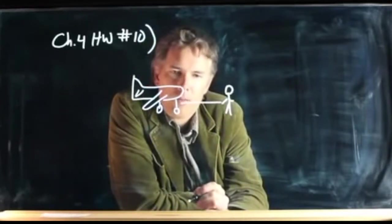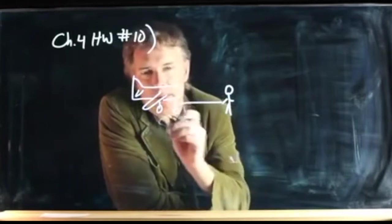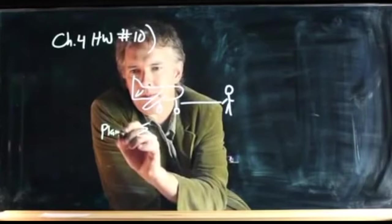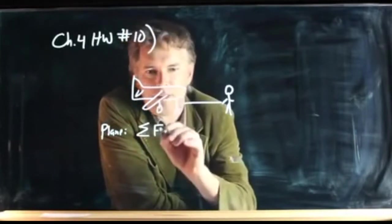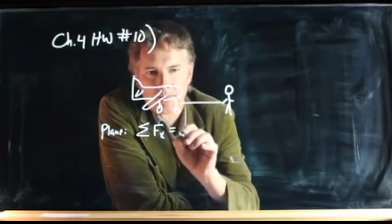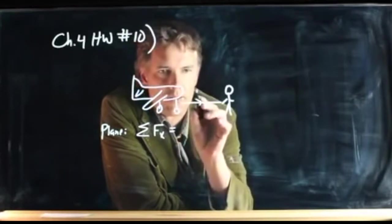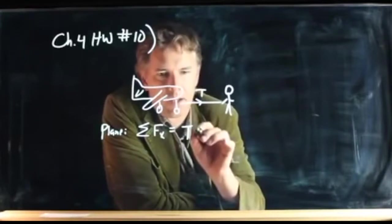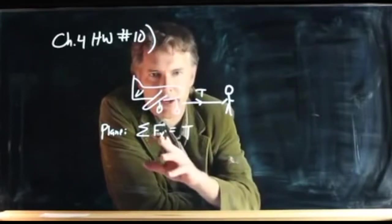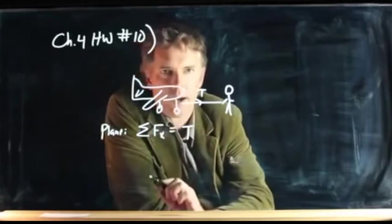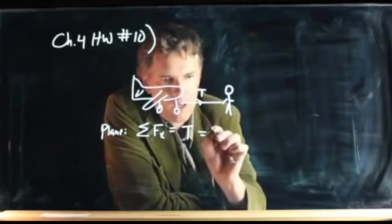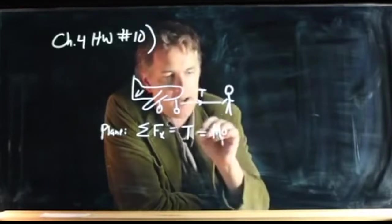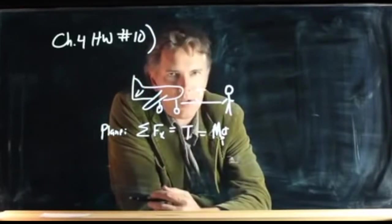If we think about the forces involved here, what can we say about the forces on the plane? The sum of the forces in the x direction is just the tension in the wire — that's the only thing acting on the plane. Other than the vertical direction, the normal force equals the weight of the plane. So tension equals the mass of the plane (capital M) times the acceleration of the plane.